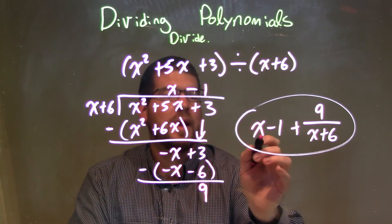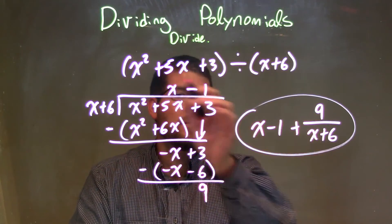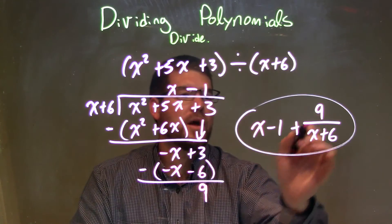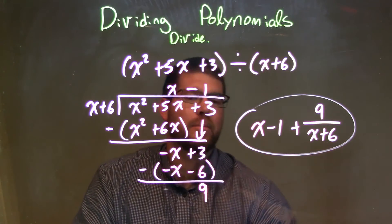So my final answer is x minus 1 plus my remainder 9 over my divisor, x plus 6.